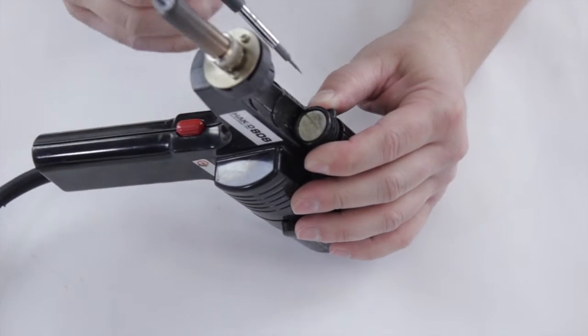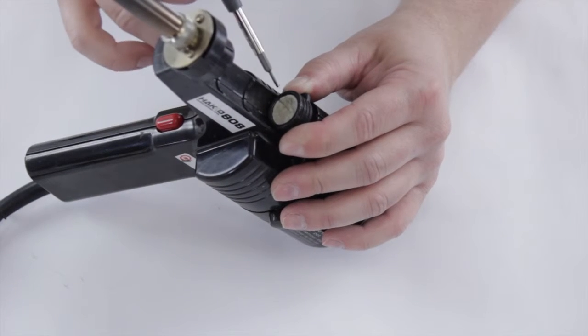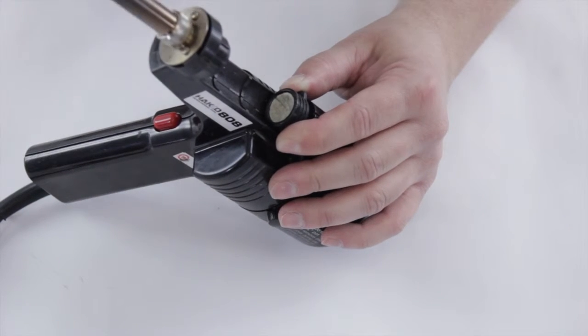And here is the old filter. As you can see, it's a little dirty. Sometimes they'll get much worse than this. You'll see lots of yellow, and that's from the flux that's been sucked up and has been caught by this, which stops it going into the motor.